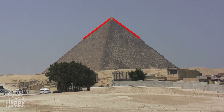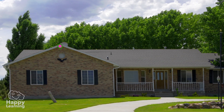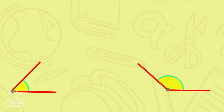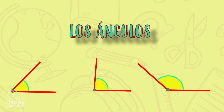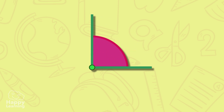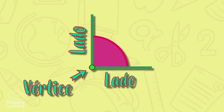Hello friends, welcome to a new Happy Learning video! Look at these images — do you know what we're looking at? They are angles, and today we are going to learn many things about them. An angle is a space between two intersecting lines or surfaces that emerge from the same point, called the vertex.